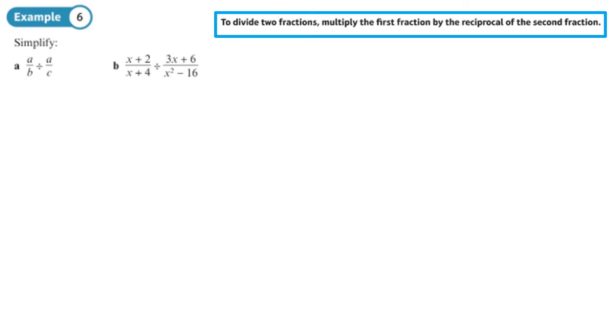This one here, we've got a division in part A. So keep the first fraction, change the sign, flip that, right, cross-canceling opportunity here. There we go. So C over B.